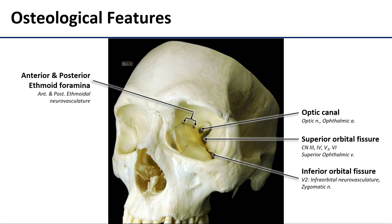On the medial wall here, we find the ethmoid foramina, both anterior and posterior. These are going to transmit the anterior and posterior ethmoid neurovasculature from the orbit into the nasal cavity.